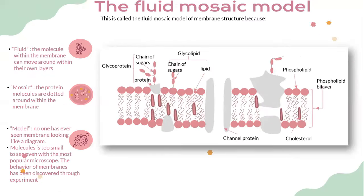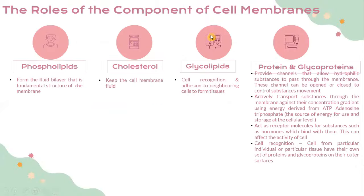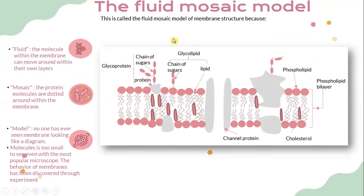Let's look into the fluid mosaic model. This is called the fluid mosaic model because 'fluid' refers to the molecules within the membrane that can move around within the layers, and 'mosaic' refers to the protein molecules distributed around within the membrane. The model itself is a representation — no one has ever seen a membrane looking exactly like the diagram, as molecules are too small to see even with the most powerful microscope. The behavior of membranes has been discovered through experiments.